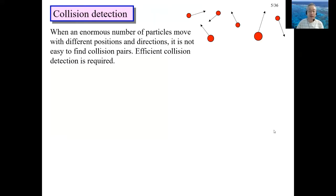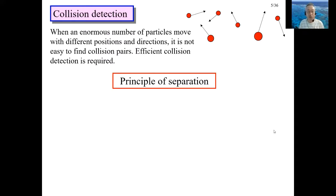The relation between pre- and post-collision velocity has been shown, but there is a difficult problem. When an enormous number of particles move with different positions and directions, it is not easy to find collision pairs and collision moments. In principle, it might be possible to find collision moments from the instantaneous distance between nearby particles, but then the time step of integration must be extremely small.